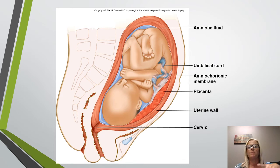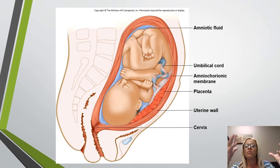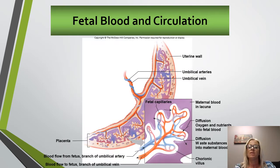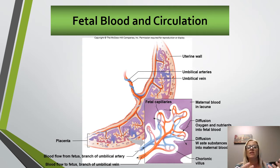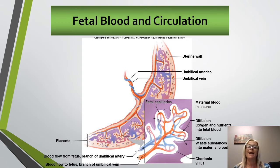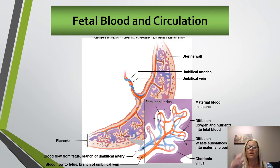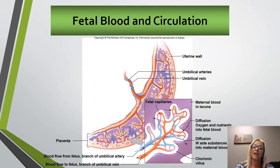The amniotic sac and amniotic fluid surrounding the fetus protect the embryo from being jarred by movements. There are some differences between fetal blood circulation and adult circulation. A major difference is that in the fetus, the inferior vena cava actually contains blood that is high in oxygen. The maternal blood supplies oxygen and nutrients and carries waste back out. Substances diffuse between the maternal and fetal blood through the placental membrane and umbilical vessels.